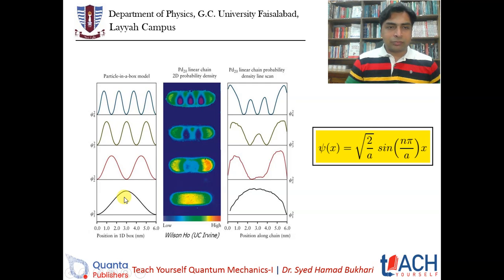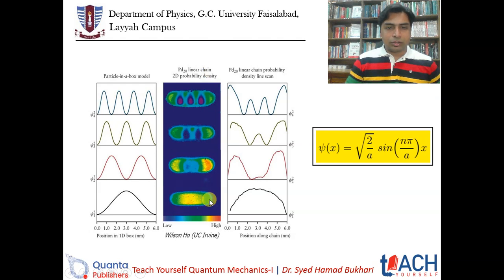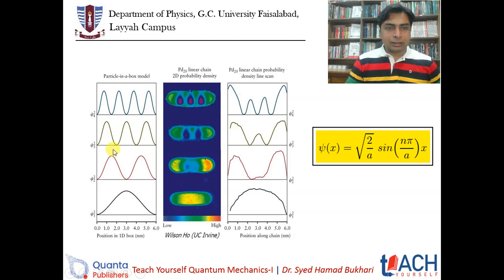These wave functions are drawn on the basis of mathematical results. They are confirmed by experiment when you compute the probability density or 2D probability density for a linear chain. These are the 2D graphs where you can see the density for the corresponding wave function. You will get the maximum peak of the wave function, and these match what we discussed in our previous lecture.